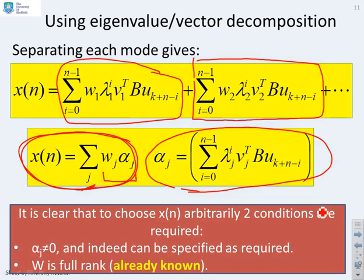Also what we need is that these alphas are not 0 and can be specified as required. The alphas are given here. Clearly I can specify these by choosing the u's as I want.